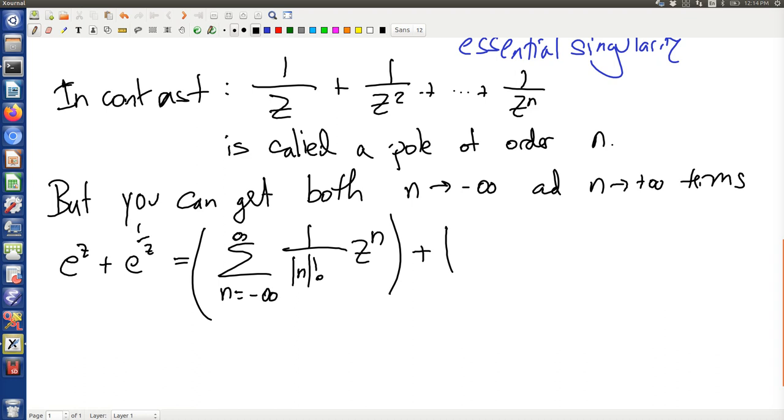perfectly analytic away from zero. But has both positive and negative exponents floating around. So that certainly can happen, and that's a function that's got that particular Laurent series.